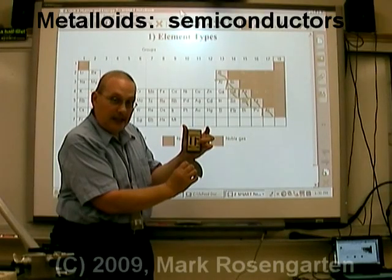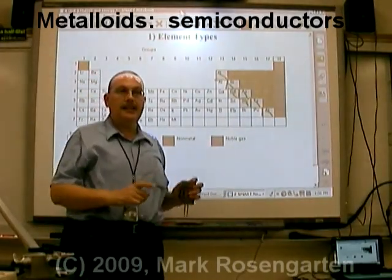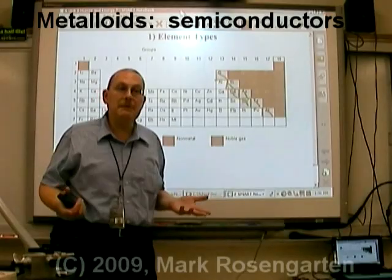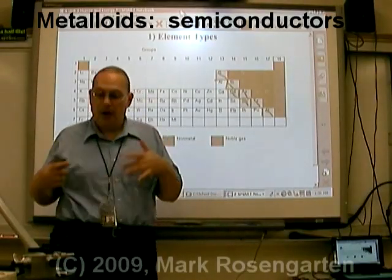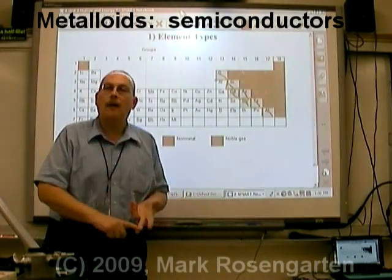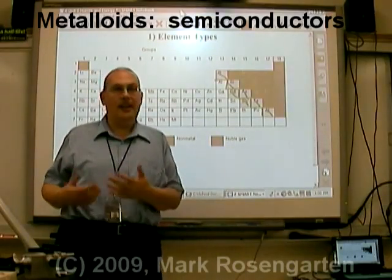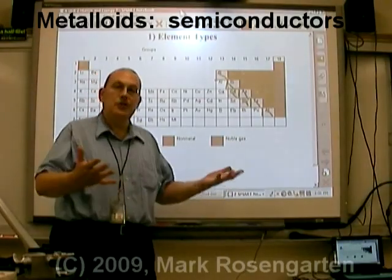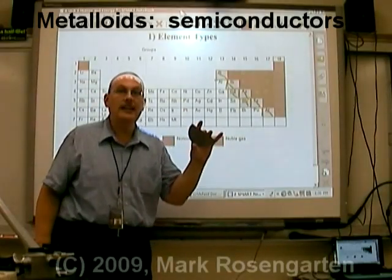Metalloids, given certain circumstances, sometimes conduct and sometimes don't — they're called semiconductors. Sometimes they conduct, sometimes they don't, which is why they make excellent transistor material. They can act as on/off switches: when they conduct it's on, when they can't conduct it's off. Off and on translates to zeros and ones of binary code, which is used in computers. That's why metalloids like silicon are so useful in the computer industry.